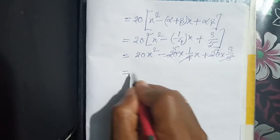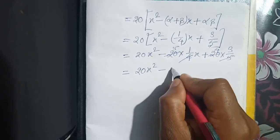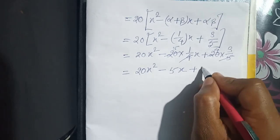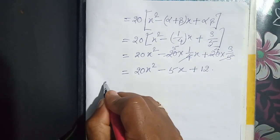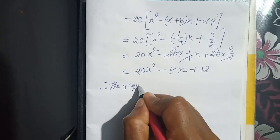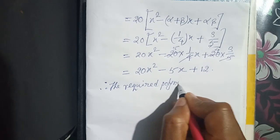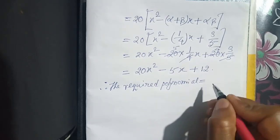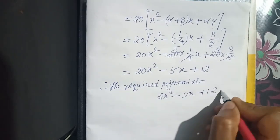This gives 20 x square minus 5x plus 12. The required polynomial equals to this.